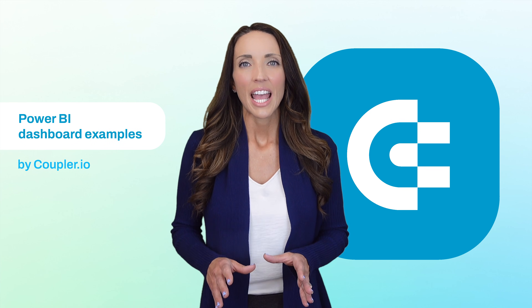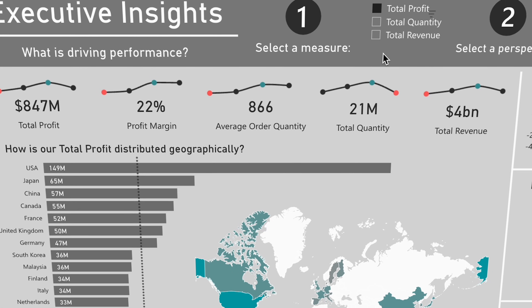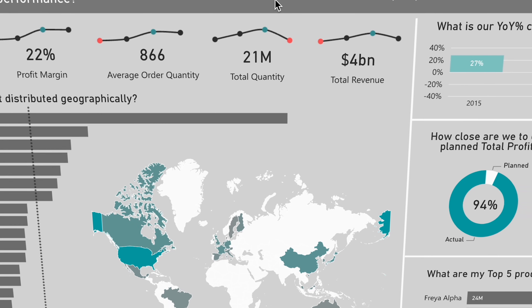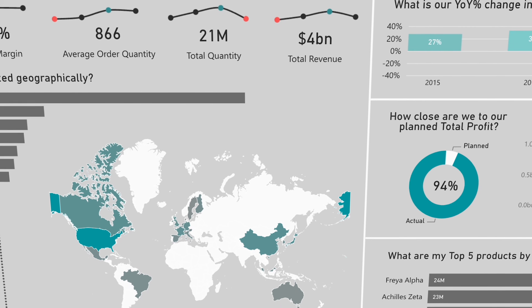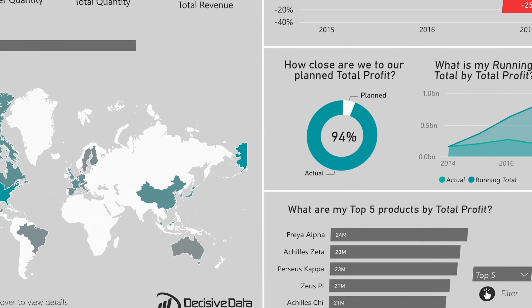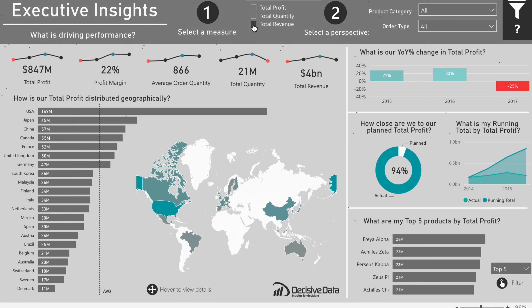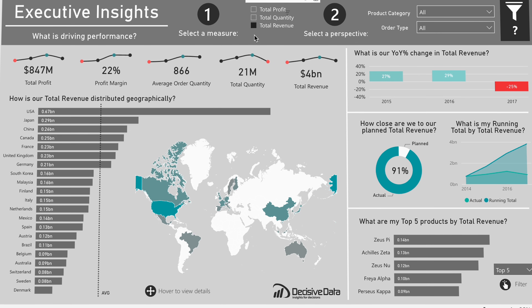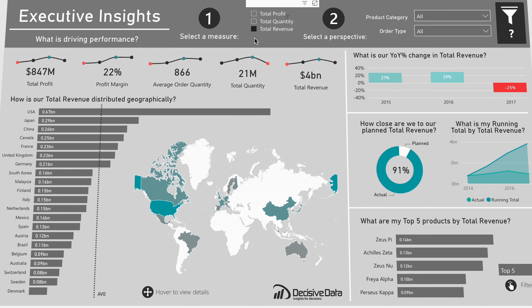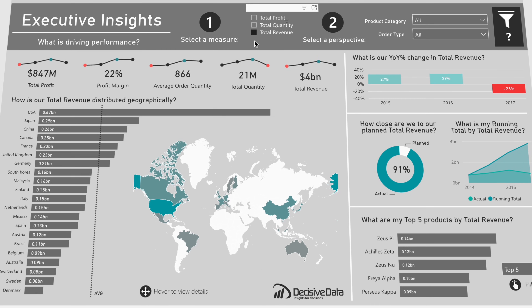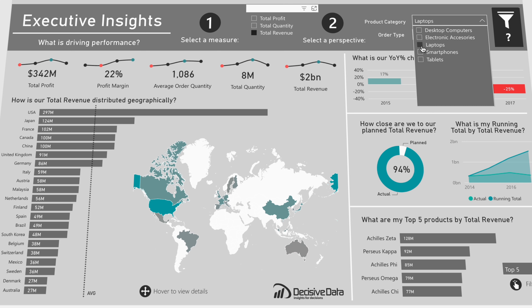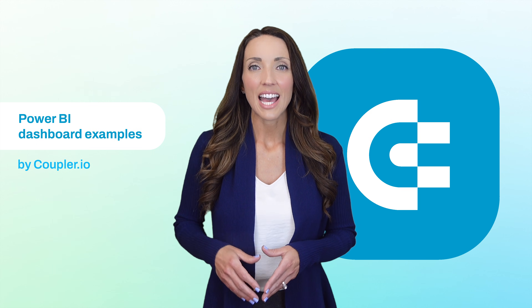Next on my list is a Power BI executive dashboard. The great thing about it is that all the important information is packed into a single page with options to filter precisely for the data you need. The first step is to choose a measure from the three available — data updates automatically as you swap from one option to another. As a second step, add the desired perspective. For example, if I want to see data specifically for laptops, I'll choose this item from the menu. It's as simple as that.